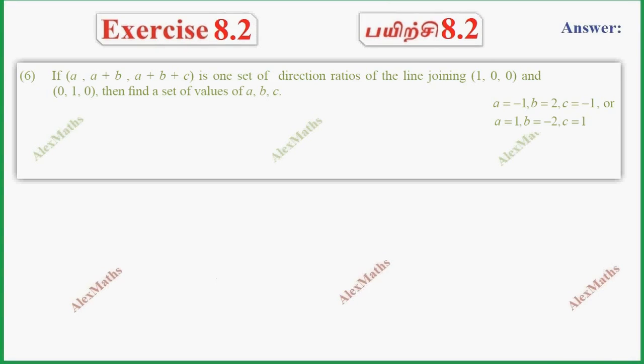Hi students, this is Alex here. Exercise 8.2, question number 6: if a, a plus b, a plus b plus c is one set of direction ratios of a line joining.